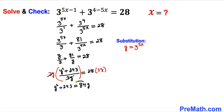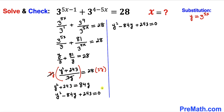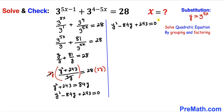Let's move 84y to the left hand side. This gives us the quadratic equation y² − 84y + 243 = 0, which we are going to solve by grouping and factoring. We split the middle term: −84y = −3y − 81y.